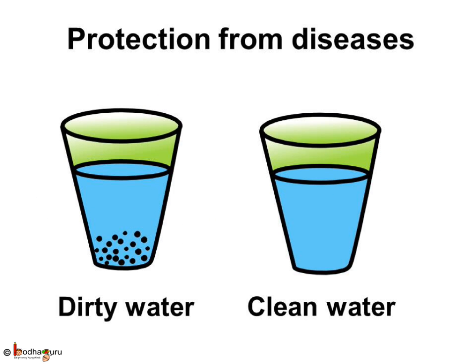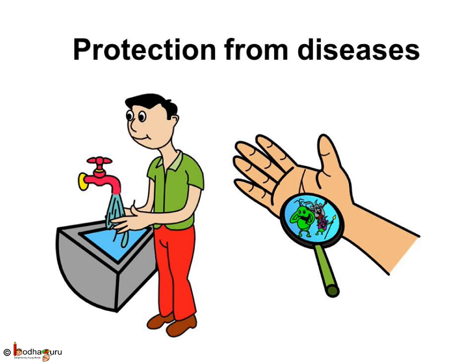As germs are present everywhere — be it air, water, or land — apart from food, drinking water should also be cleaned. It should be chlorinated, boiled, or filtered. Drinking unclean water will make us ill. Is eating clean, properly cooked food and drinking clean water enough to keep ourselves healthy? No, something more is required — washing our hands before every meal. Even if we eat clean healthy food and drink clean water, dirty hands will still spread infections and diseases. The germs get on our hands and in our nails and enter our body when we eat with dirty hands. So we should wash our hands before and after meals.